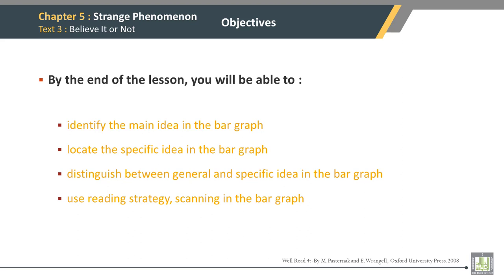Chapter 5, Strange Phenomena, Text 3: Believe It or Not. Objectives: By the end of the lesson, you will be able to identify the main idea in the bar graph, locate the specific idea in the bar graph, distinguish between general and specific ideas in the bar graph, and use the reading strategy of scanning in the bar graph.